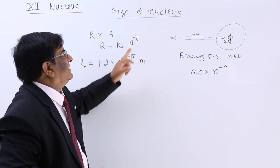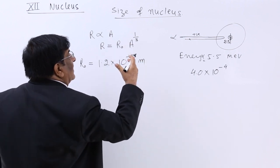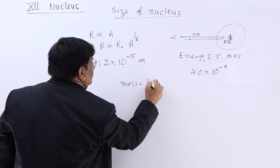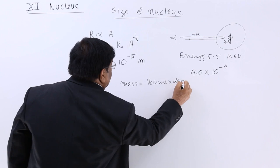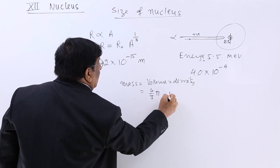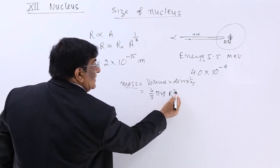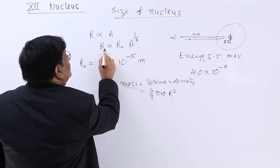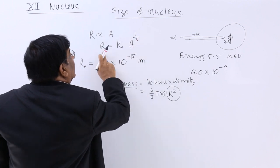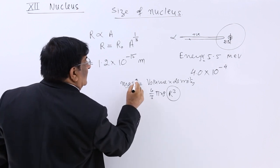Sometimes students think why this one-third is there. One-third is there because this governs atomic mass, and mass is equal to volume into density. Volume is how much? 4 upon 3 π R³ into density. So mass is R³. So R should be proportionate to what? Equal to what? One-third of this power. That is why this one-third is here. Now dimensions are matching. So radius is equal to mass to the power one-third.